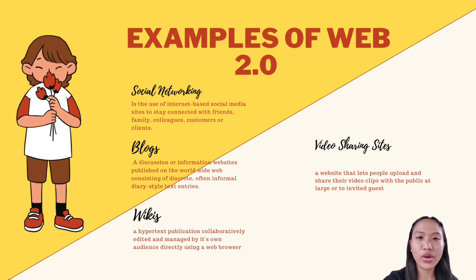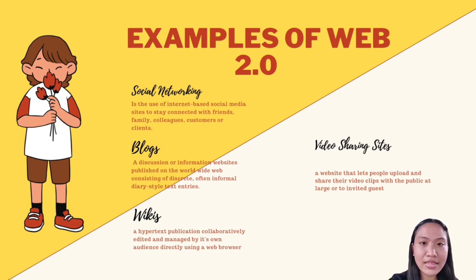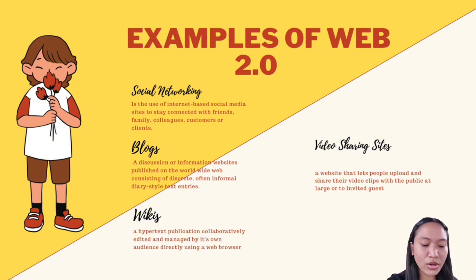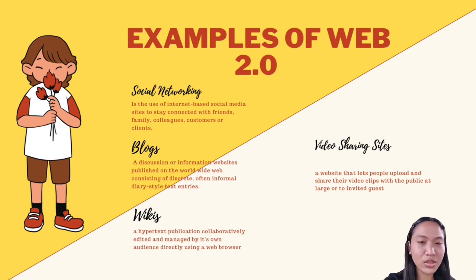Here are the examples of Web 2.0. The first example is social networking — the use of internet-based social media sites to stay connected with friends, family, colleagues, customers, or clients. Some of the best examples of social networking sites are Facebook, Twitter, and Instagram.